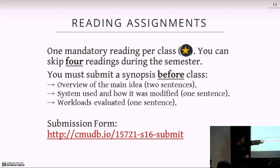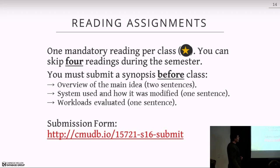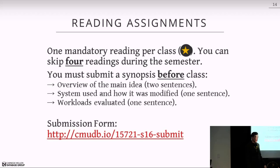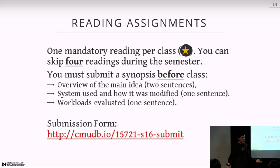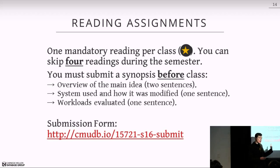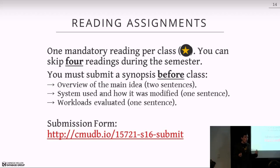There's an online Google form where you can submit your synopsis — it'll be timestamped. You're allowed to skip four assignments throughout the entire semester. In total there are about 24 mandatory papers, so you only have to read 20 of them. On the schedule, papers marked with the star are the primary reading; there are also optional additional readings that I'll cover in lectures because they provide another perspective. The optional readings may also be useful when you go to do your final project.